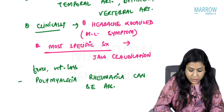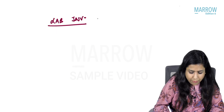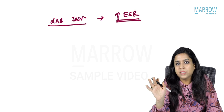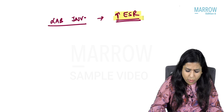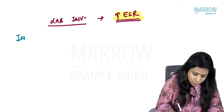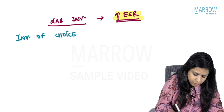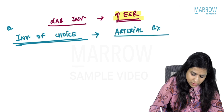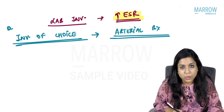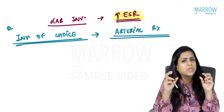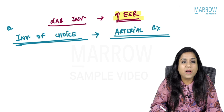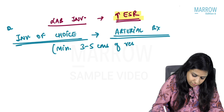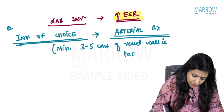On lab investigations, a very important finding is increased ESR, though ESR increases in any chronic inflammatory disorder. The investigation of choice is arterial biopsy — biopsy of the involved vessel. Because the lesion is very focal, we must sample approximately 3 to 5 centimetres of the vessel wall.